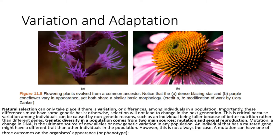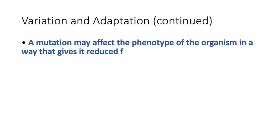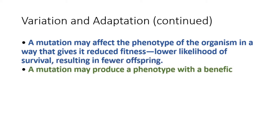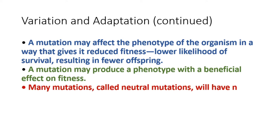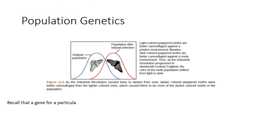A mutation can have one of three outcomes on the organism's appearance or phenotype. A mutation may affect the phenotype in a way that gives it reduced fitness — a lower likelihood of survival — resulting in fewer offspring. A mutation may produce a phenotype with a beneficial effect on fitness. Many mutations, called neutral mutations, will have no effect on fitness.